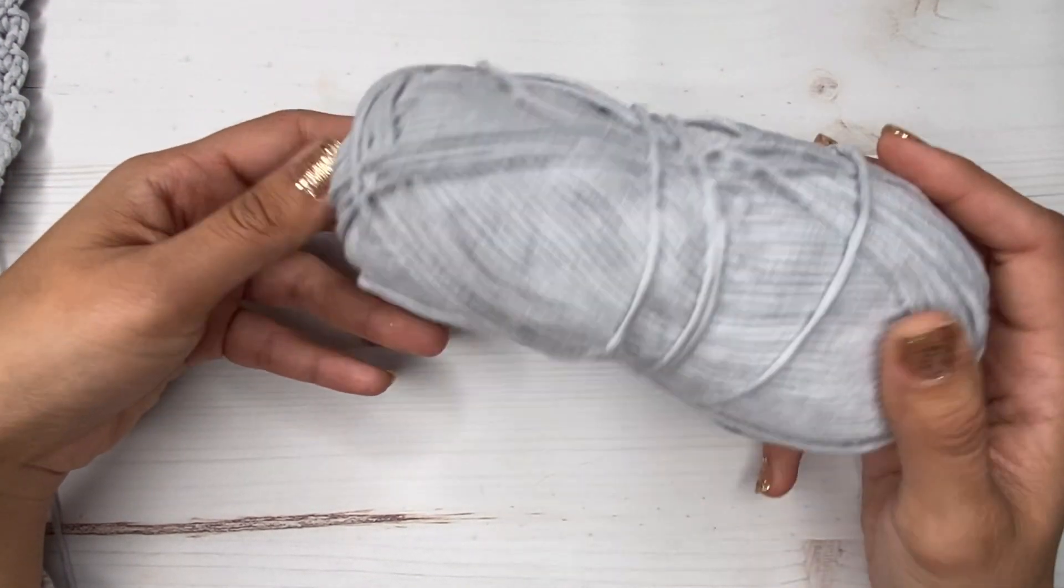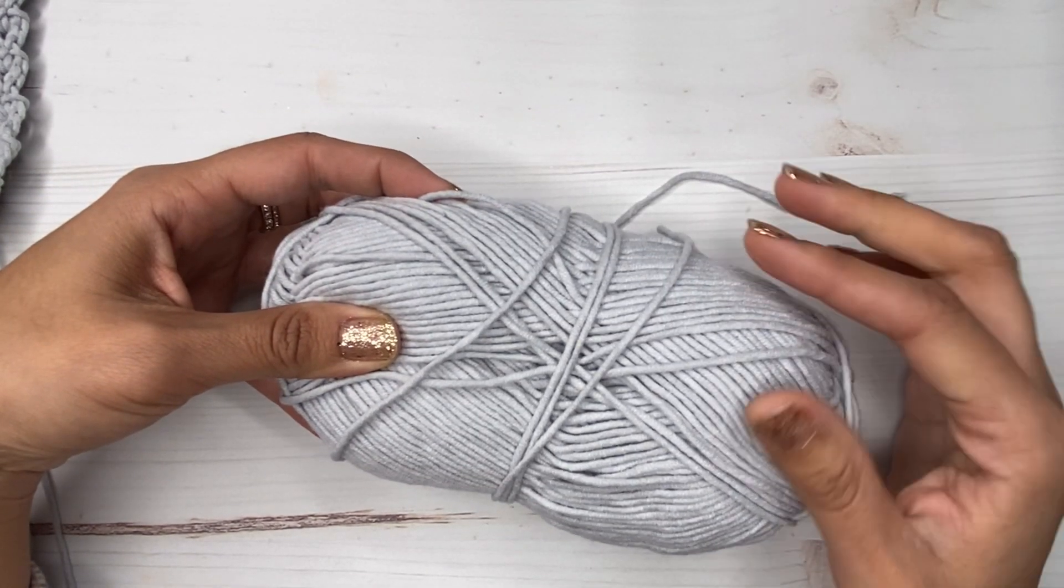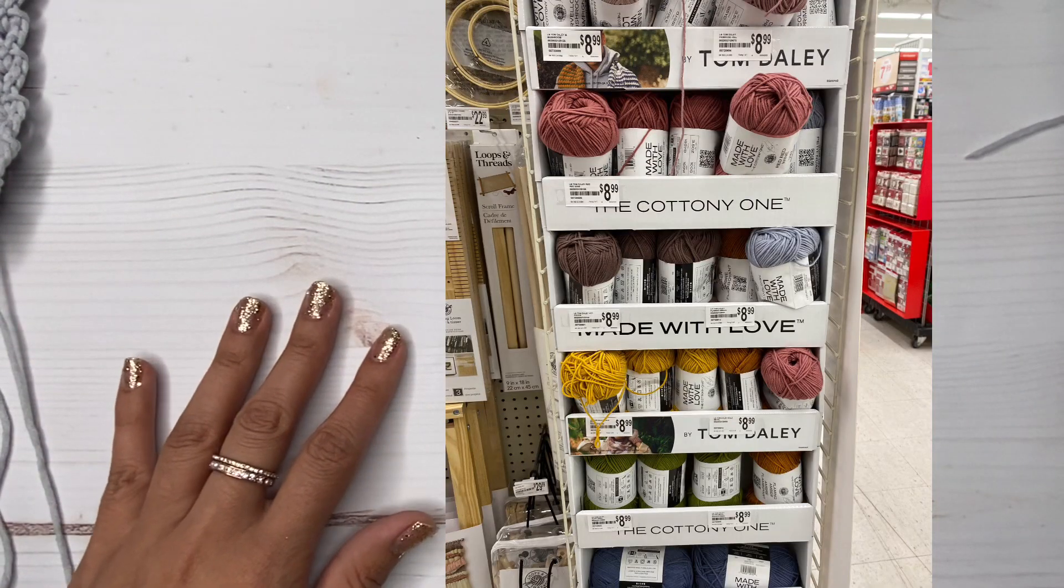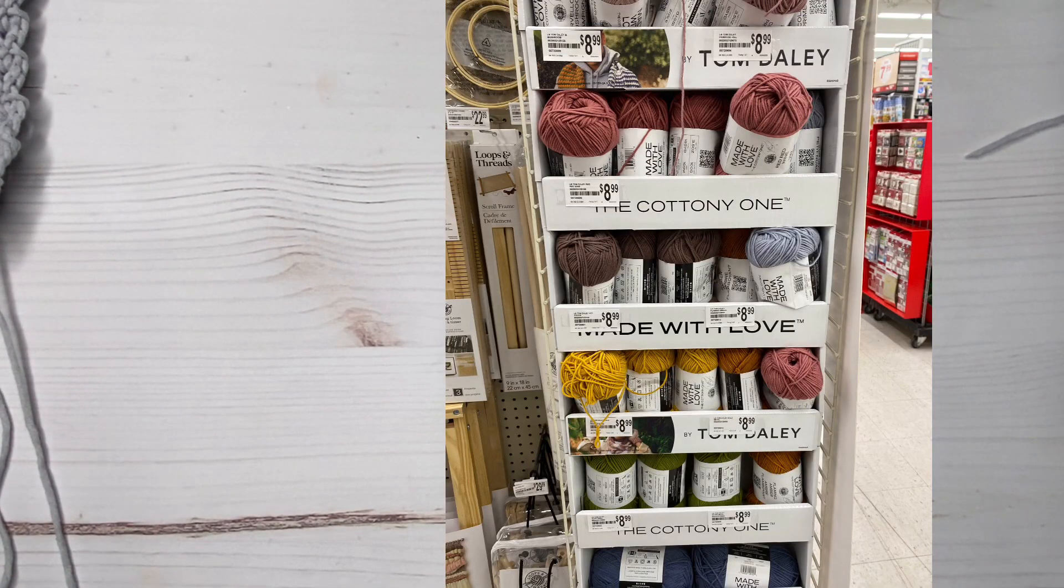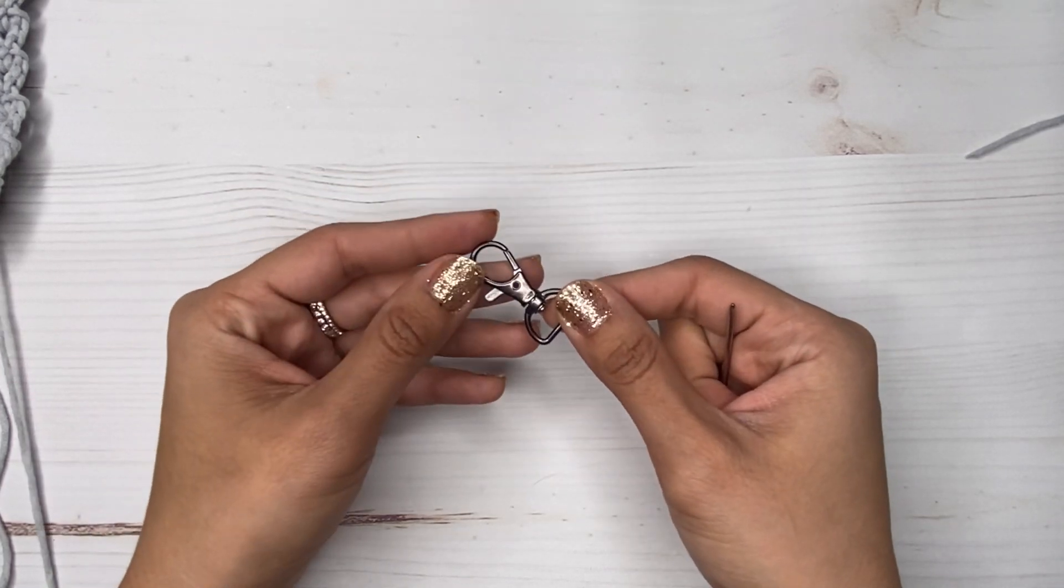And we're going to use this yarn by Lion Brand, it's a cotton yarn. I will leave a picture of it because I forgot the name of it, but I know it's cotton. And we're also going to use a keychain clasp and a yarn needle.